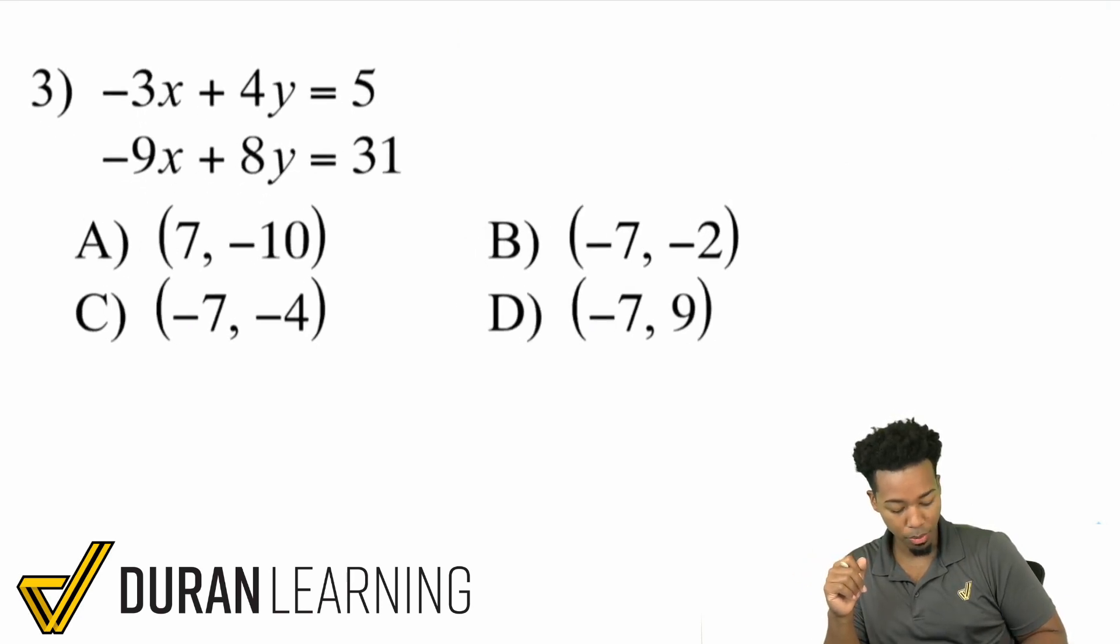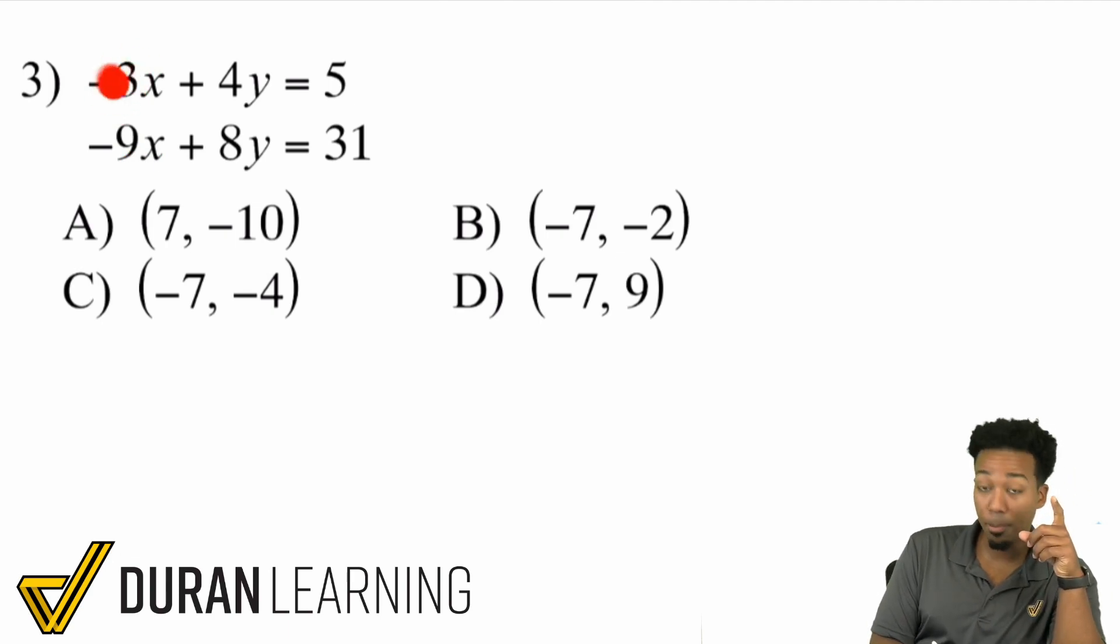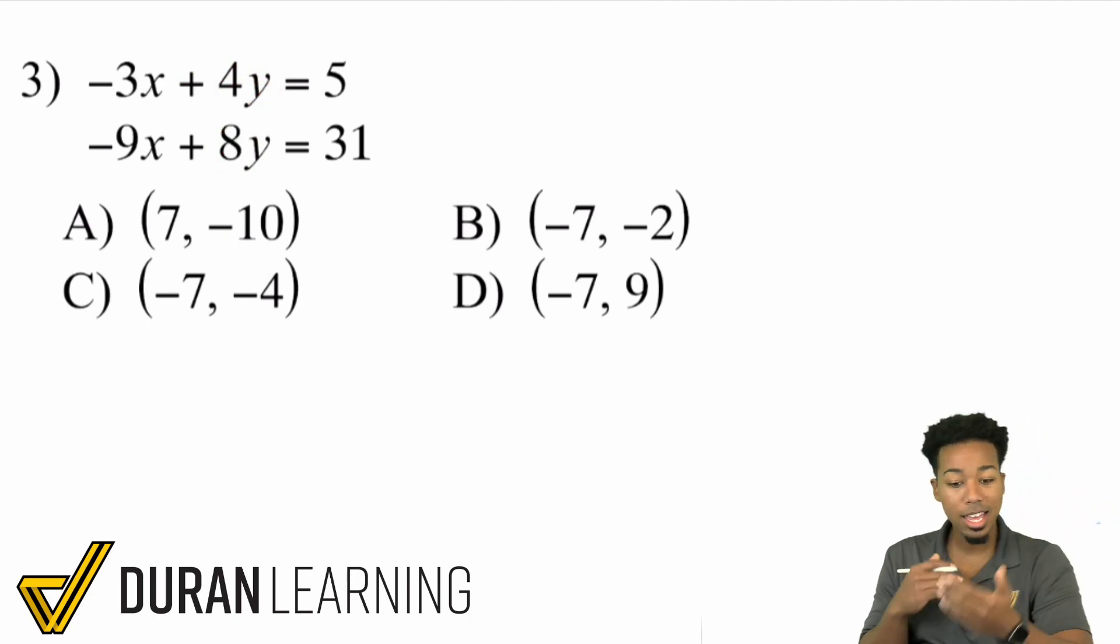Let's try this one out here at number 3. I'm looking at this and I'm saying, hey, I got a negative 3x and a negative 9x. I could, if I wanted to, multiply this equation by 3. I would want to multiply by negative 3 because if I multiply by negative 3, that's going to give me a positive 9 and that'll be a negative 9. On the flip side, you could also multiply the entire equation by 2, but you would probably want to multiply by negative 2. That way you have a negative 8y and a positive 8y and you can cancel out the y's. Either way would work.